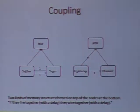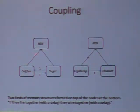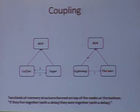Here is what one of the memory formation rules looks like. This is based on the famous principle: if they fire together, they wire together. So if we have coffee and sugar together, this structure will form, along with these arrows. And if we have lightning followed by thunder, then this structure will form under certain additional conditions.